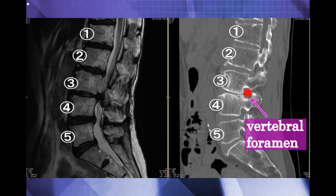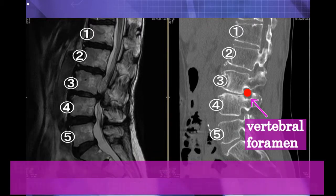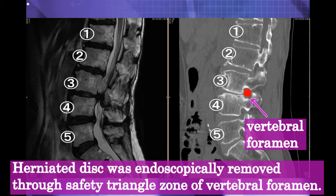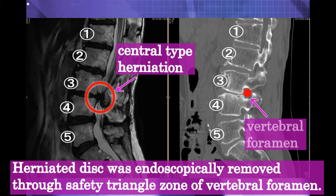The ventral and outer portion of this foramen is called the safety triangle zone. We used this safety area as the entry point for the endoscope. And finally, we removed the herniated lumbar discs.